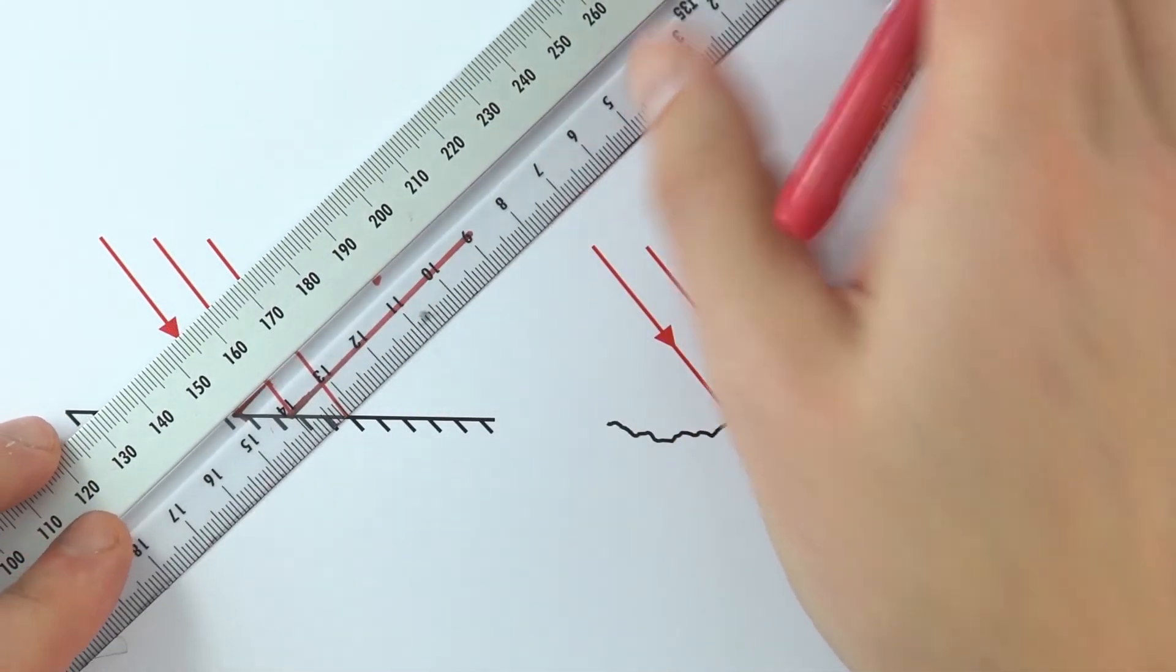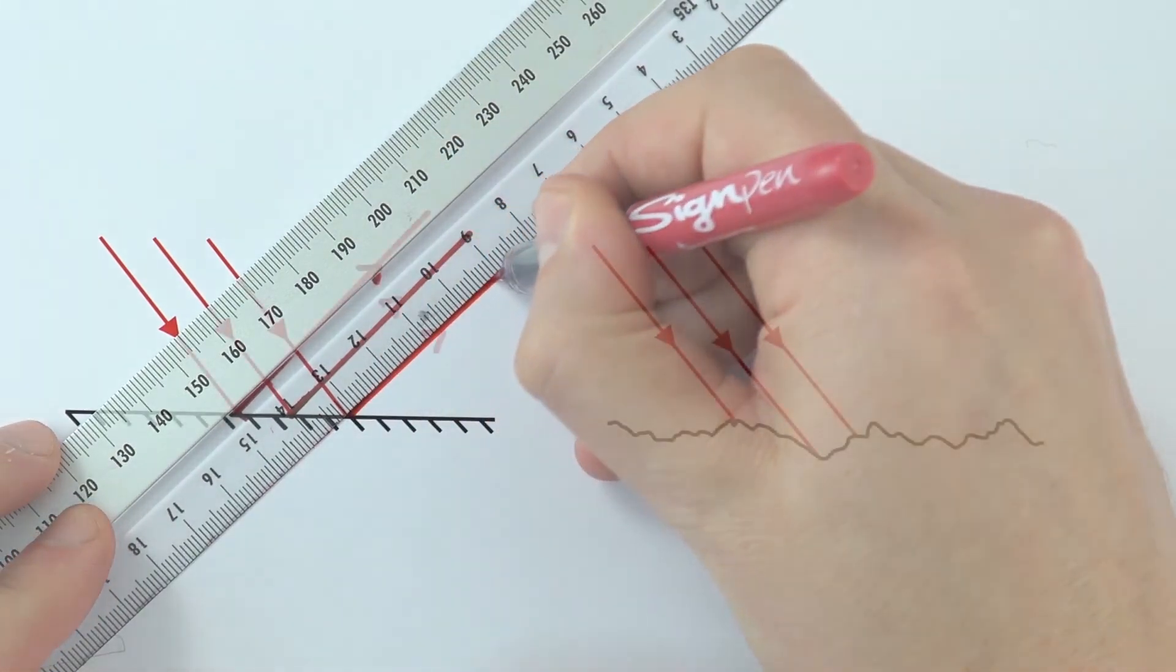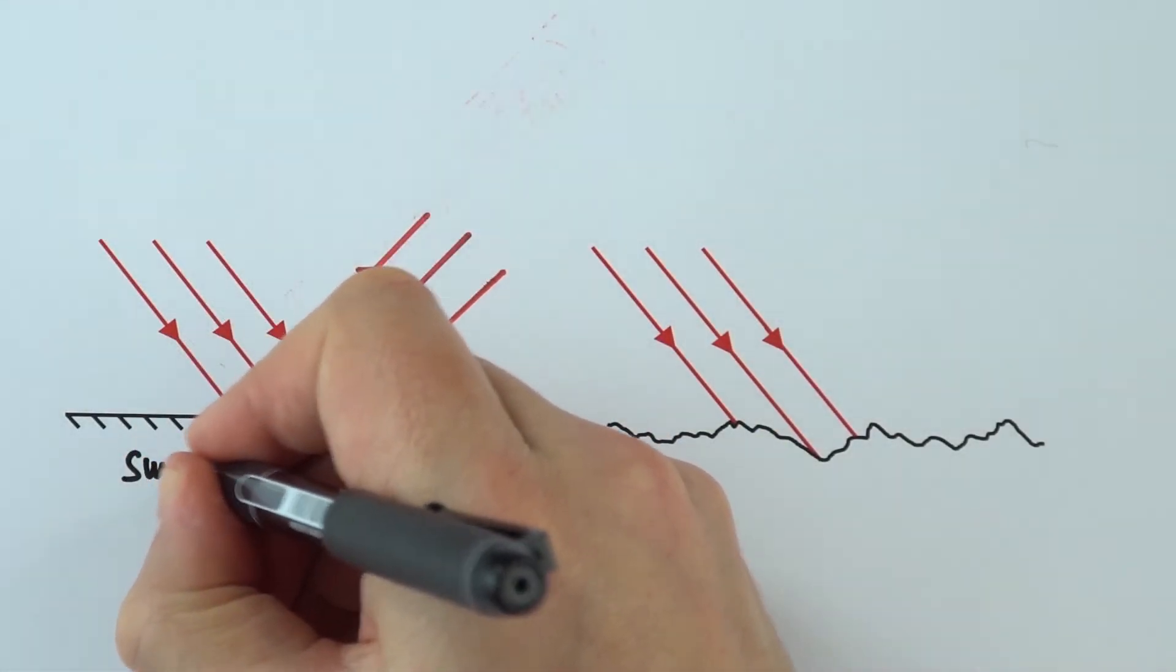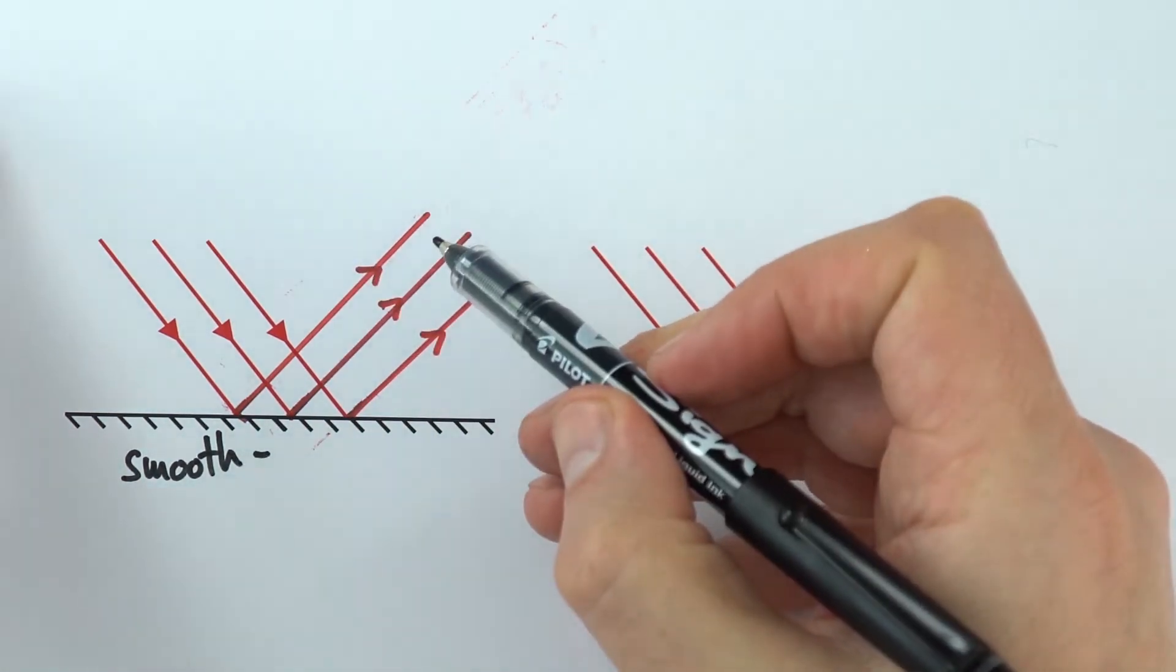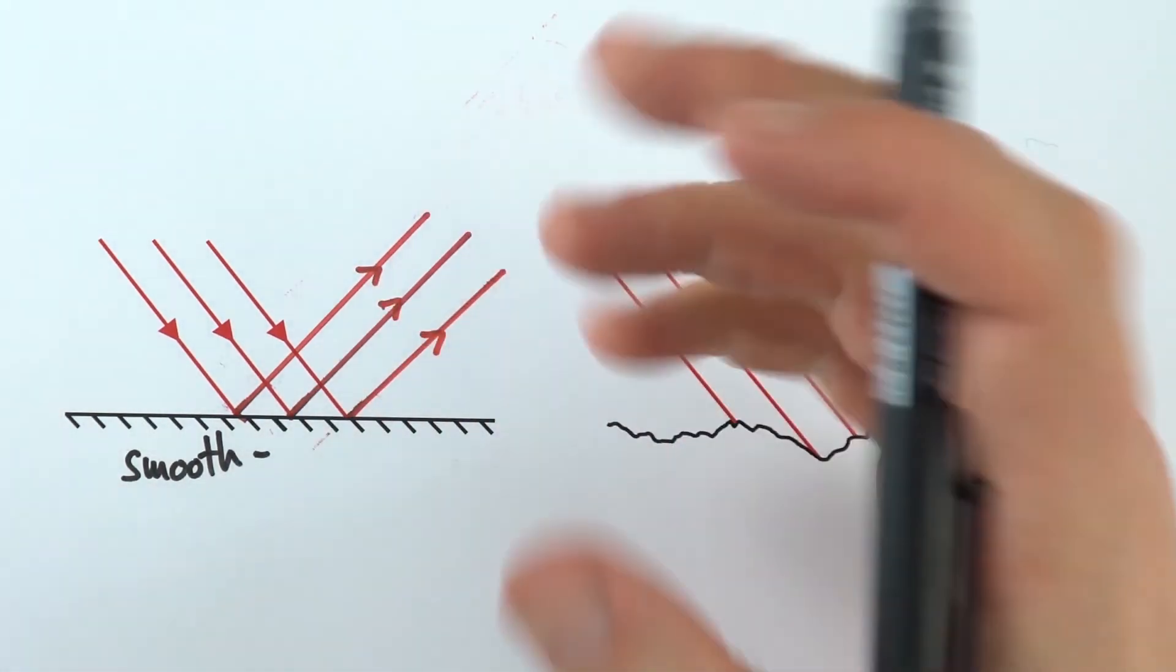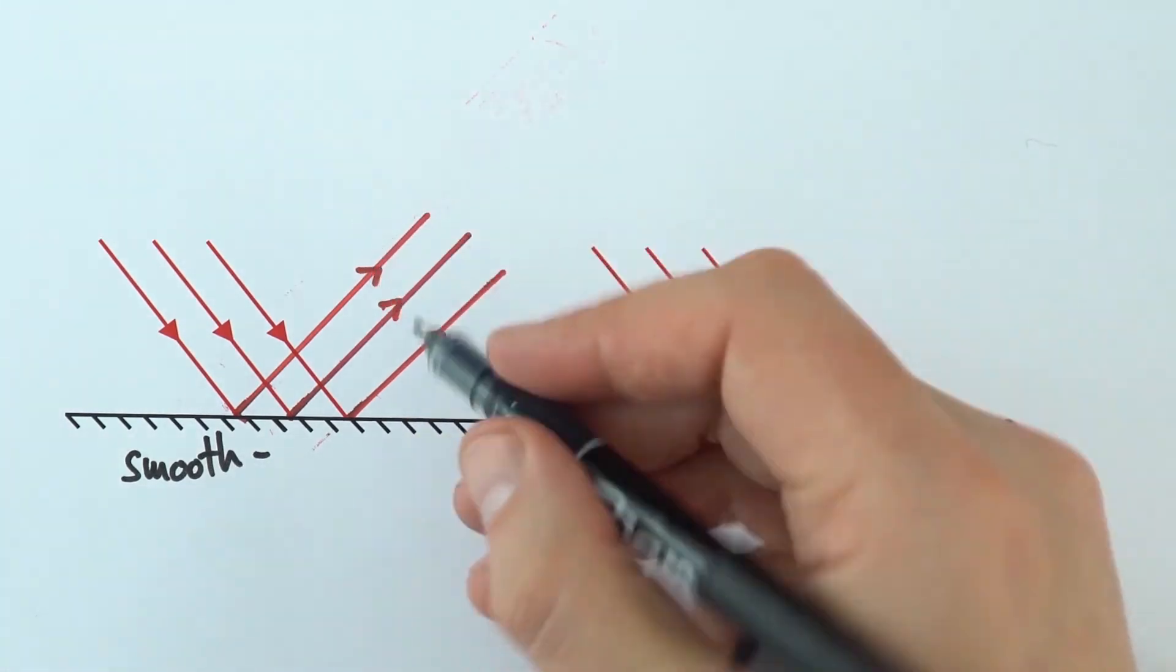What we have here is a smooth surface, and this kind of reflection where everything comes in parallel and comes off parallel gives us a lovely image. This is what we call a specular reflection.